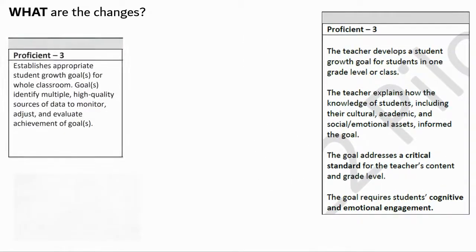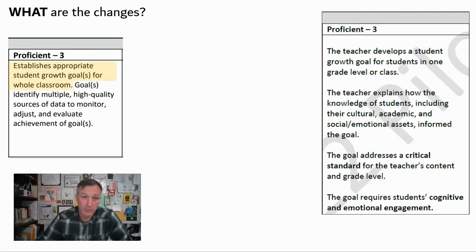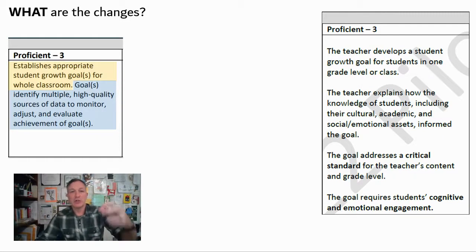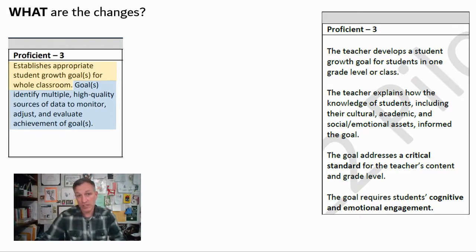In the original student growth goal rubrics, it starts off with establishing appropriate student growth goals for a whole classroom, and then the goals identify multiple high quality sources of data to monitor and evaluate the achievement of those goals. That second part has actually been relocated to be emphasized in the point twos — 6.2 and 3.2 — which are really about the outputs and the outcomes. So the revised goal setting rubrics really focus on that first part.